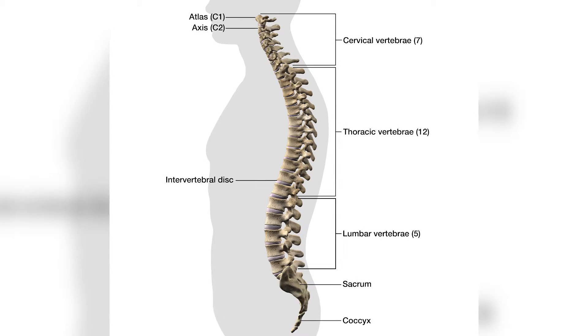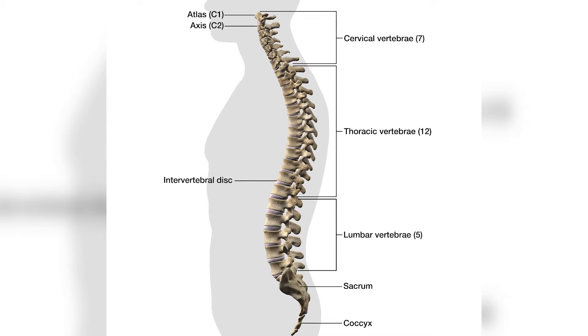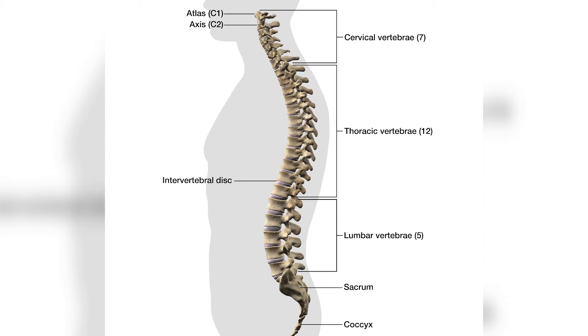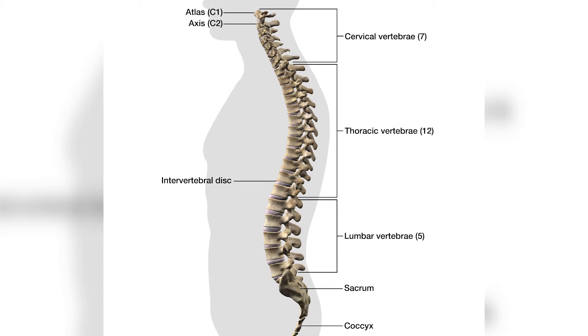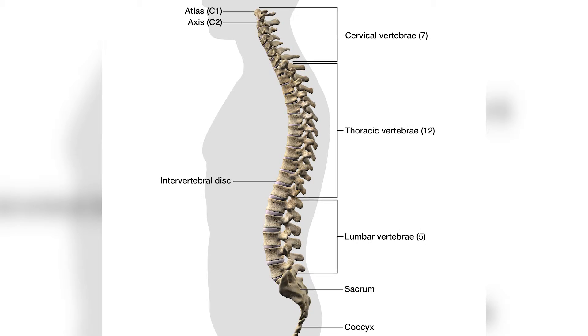In order to understand what could cause low back pain, we need to know the structures that make up the lumbar spine. The lumbar spine consists of facet joints, sacroiliac joint, vertebral bodies, discs, nerve roots, ligaments, and spinal cord. Any injury to these structures could be a cause of the pain.